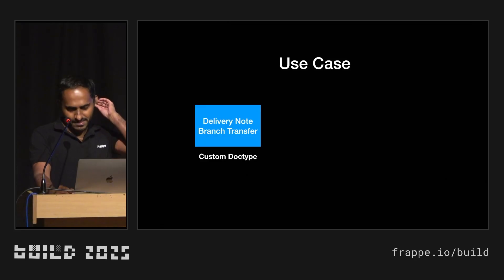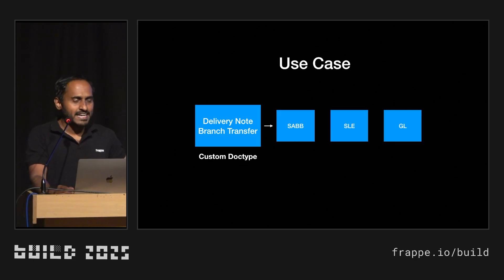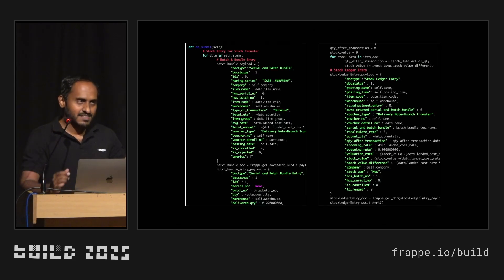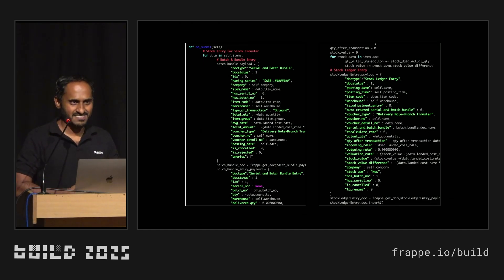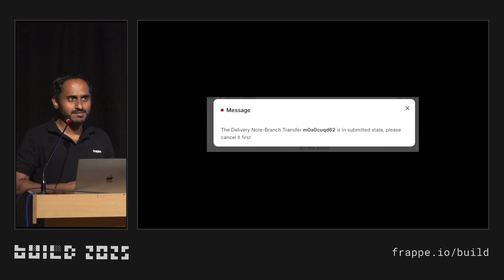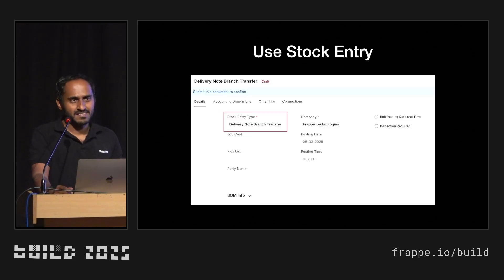The next use case: one developer created a custom doc type called 'delivery note branch transfer' and then created serial and batch bundle, stock ledger entry, and GL entry documents against it. He used ChatGPT — just copied the code from ChatGPT and pasted it in the file. He was able to submit the document, but when he tried to cancel it he started facing issues. ChatGPT is smart, but ChatGPT doesn't understand how complex ERPNext is. Try avoiding this kind of customization.